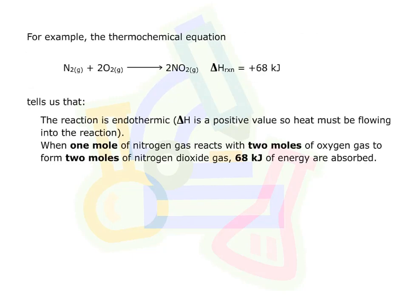For example, this thermochemical equation tells us that the reaction is endothermic. Delta H is a positive value, so heat must be flowing into the reaction. When one mole of nitrogen gas reacts with two moles of oxygen gas to form two moles of nitrogen dioxide gas, 68 kilojoules of energy are absorbed.